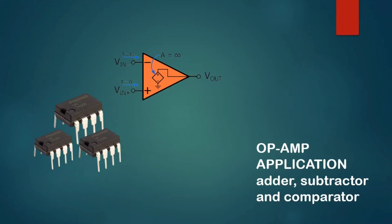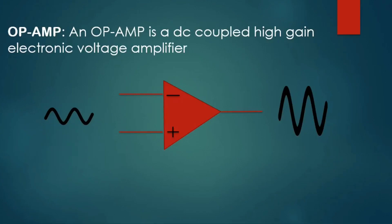Hello everyone. Today in this practical session we will show you how an op-amp, that is an operational amplifier, can be used as an adder, subtractor, and comparator. Before going to that, first I would like to give you a brief introduction about op-amp. Basically, an op-amp is a DC-coupled high-gain electronic voltage amplifier. The function of an op-amp is to amplify the input voltage by about 10³ to 10⁶ times.